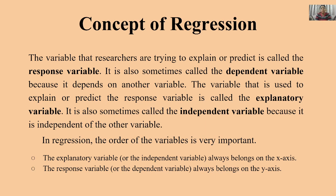The variable that researchers are trying to explain or predict is called the response variable. The dependent variable is also called the response variable or the explained variable, because it depends on another variable. The independent variable is also called the explanatory variable or the predictor variable. So we have three sets of names: dependent or independent, explained or explanatory, and response or predictor variable.